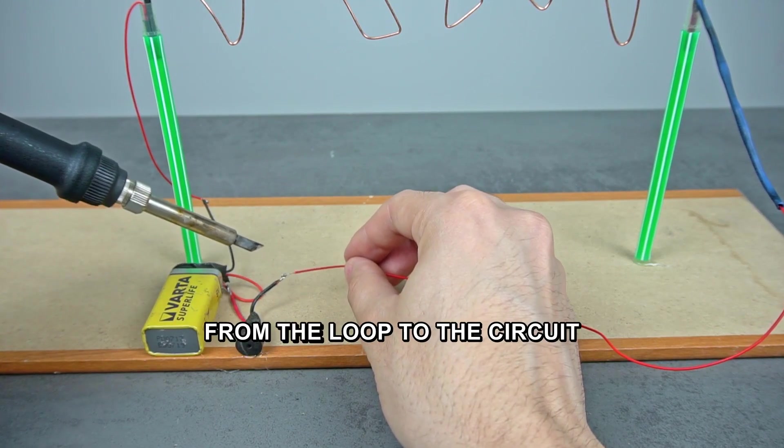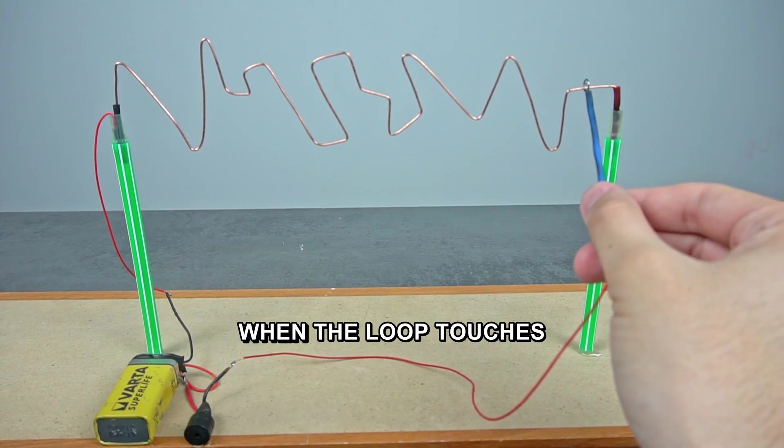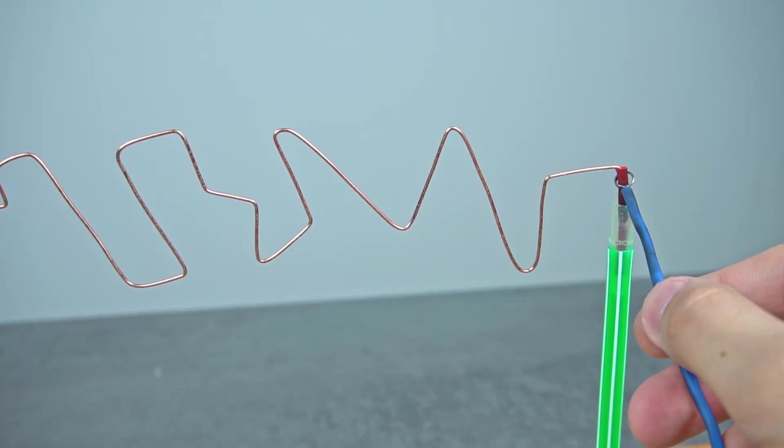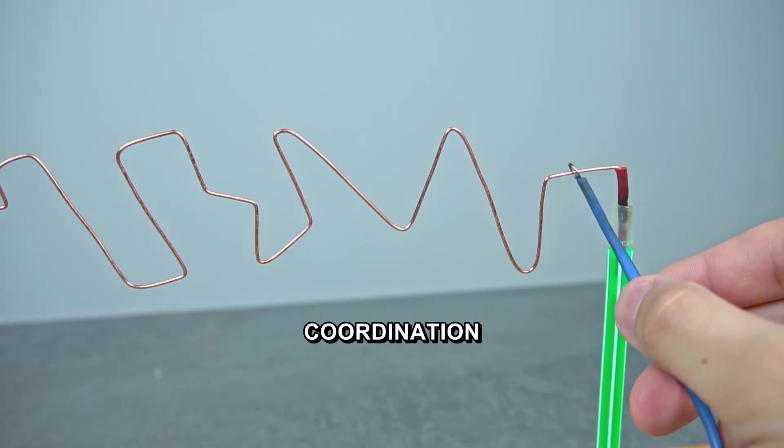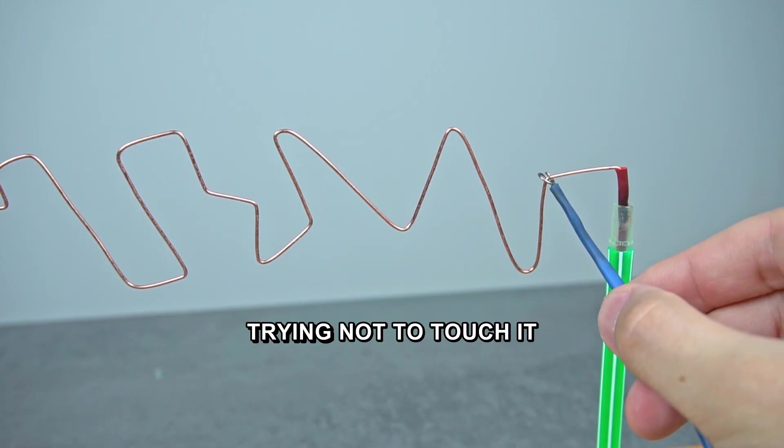Solder the second end of the wire from the loop to the circuit. When the loop touches the copper wire, the buzzer signals. The attention and coordination game is ready. Guide the loop from start to finish of the wire, trying not to touch it.